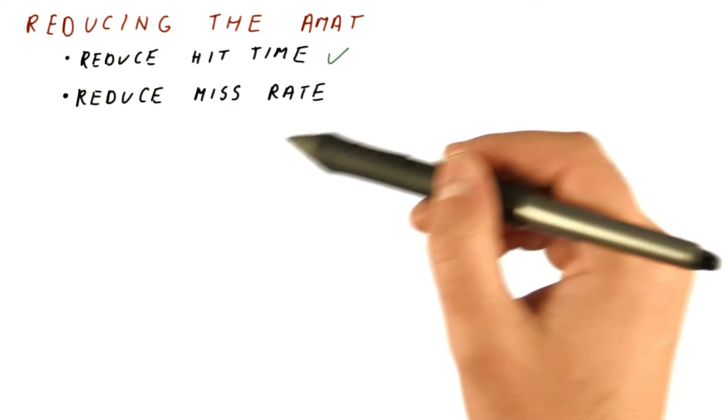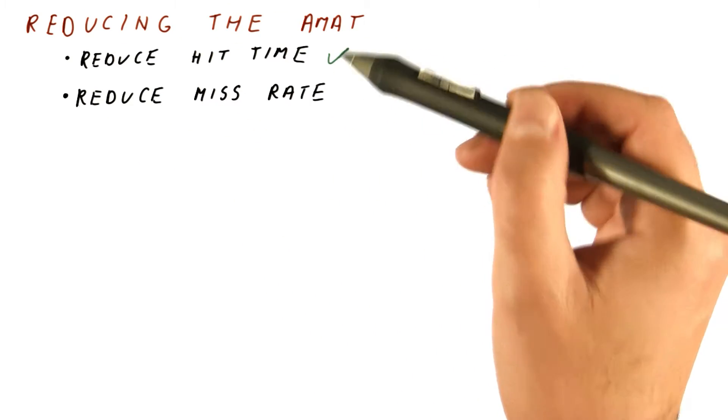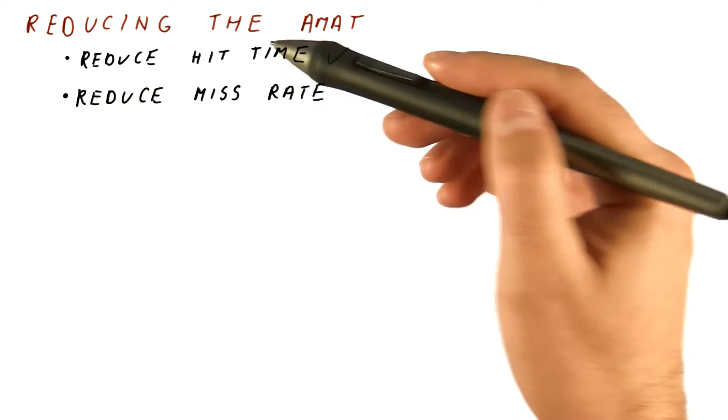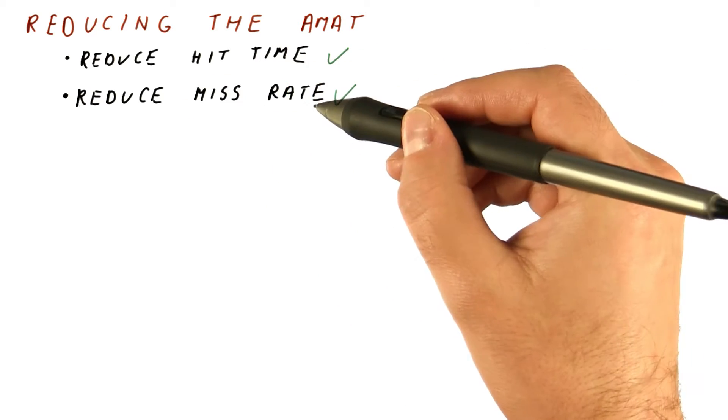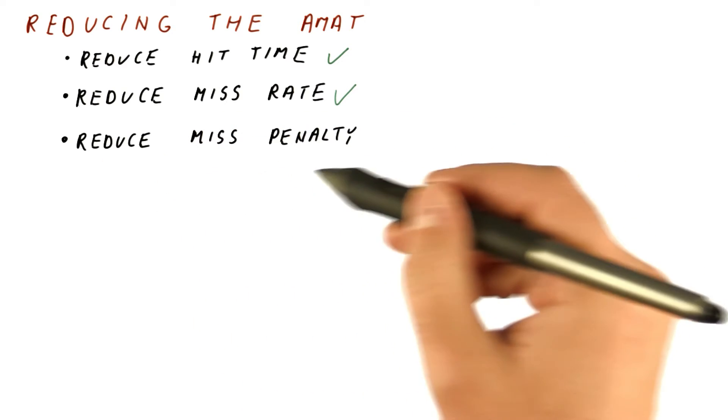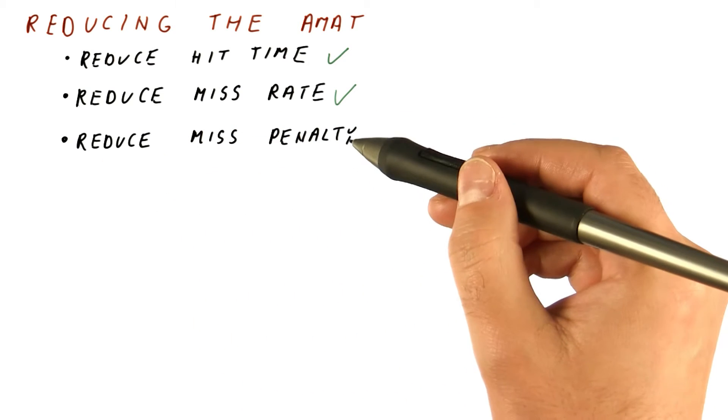Going back to our choices for reducing the AMAT, we have seen that we can reduce the hit time. We have now seen that there are techniques that reduce the miss rate. And the final set of techniques are those that reduce the miss penalty.